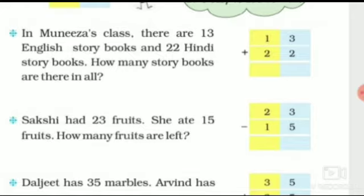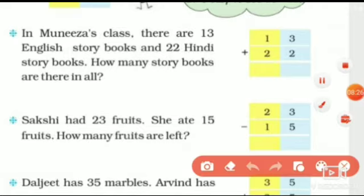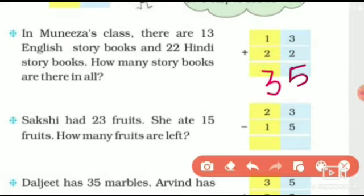Agar humko total find karna hai, so we will add. 3 plus 2 is 5, and 1 plus 2 is 3. So how many story books are there in all? There are 35 story books in all.